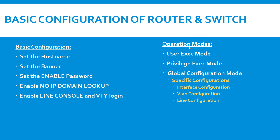Before we go into device configuration, we need to know the basic modes available in routers and switches. There are three basic operation modes: the first is user executable mode, the second is privilege execution mode, and the third is global configuration mode. From global configuration mode, you move into specific modes like interface configuration, VLAN configuration, and line configurations.